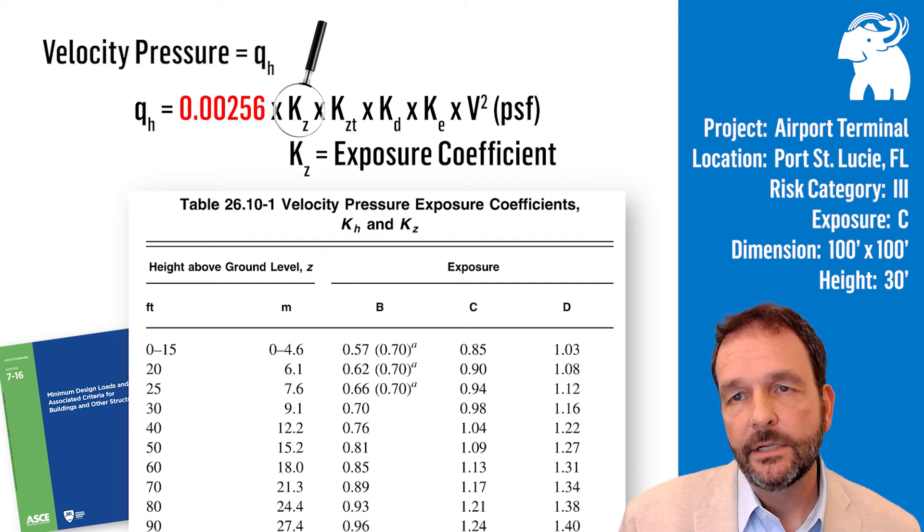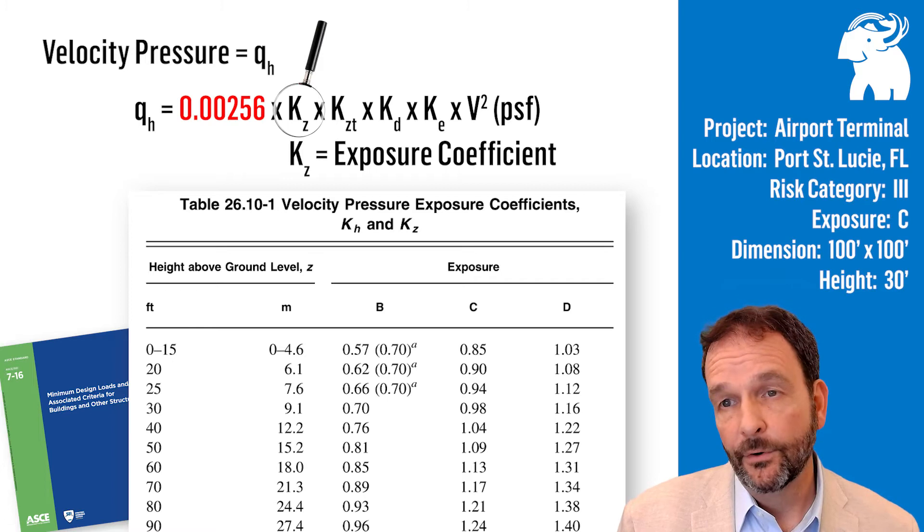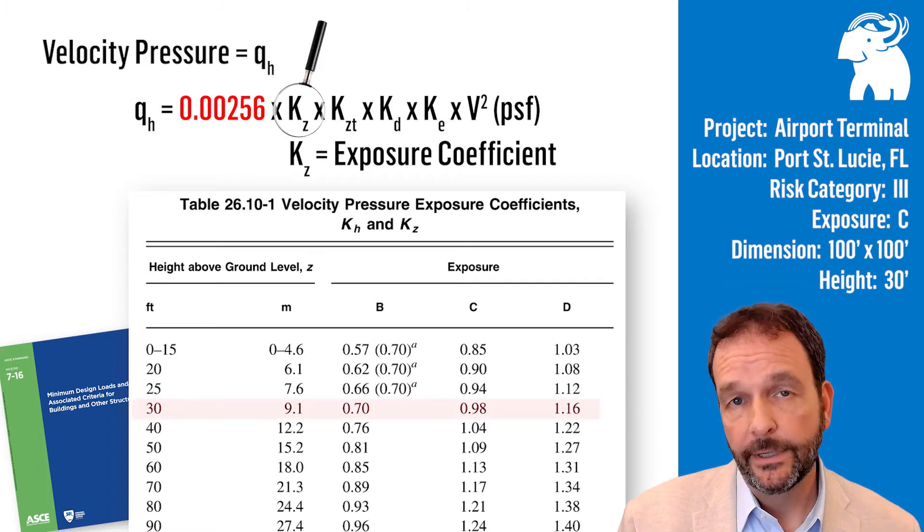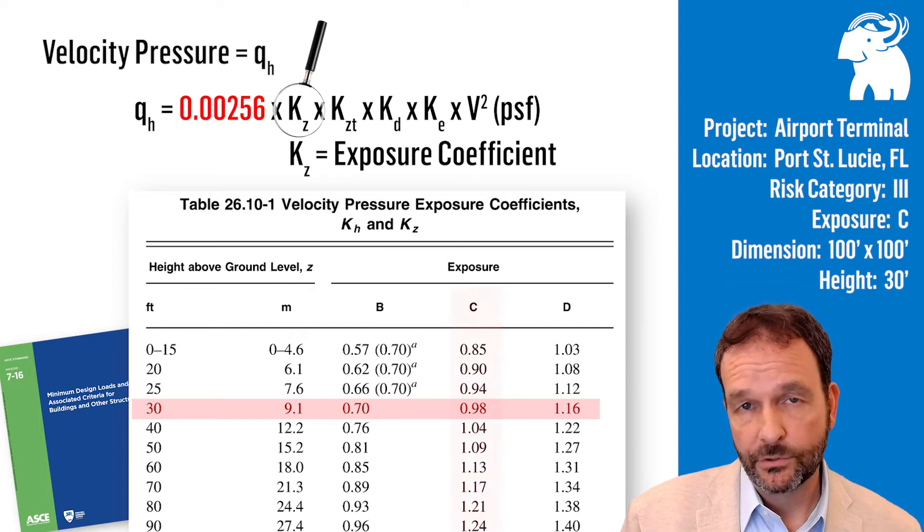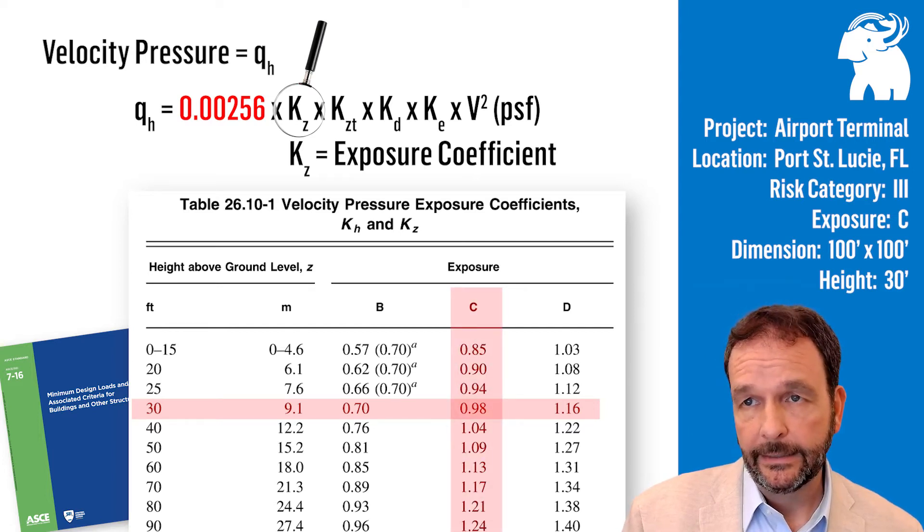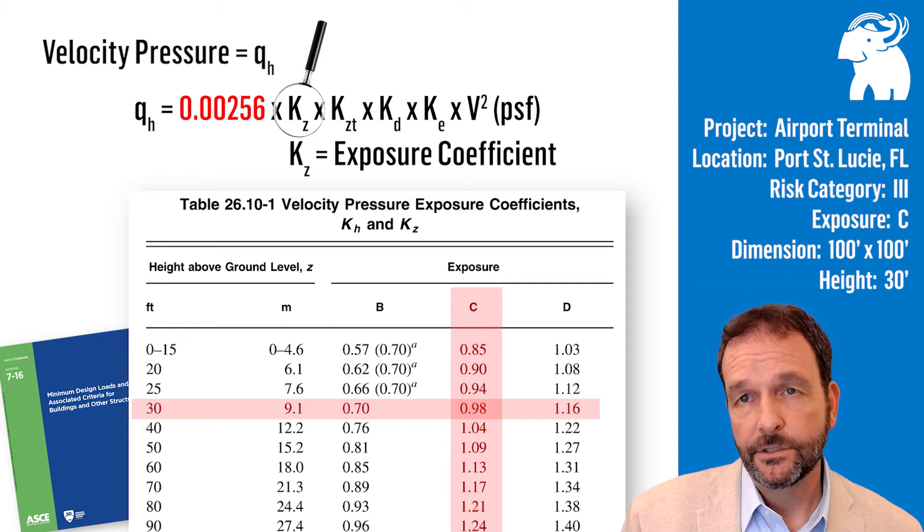Our K sub Z exposure coefficient for our building example would be a 30-foot high roof surrounded by exposure C, open terrain, and the K sub Z exposure coefficient is 0.98 for our example.